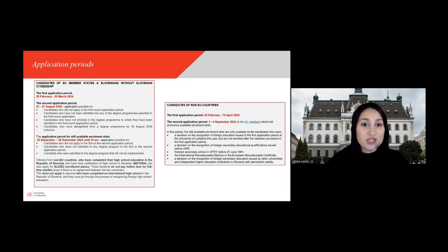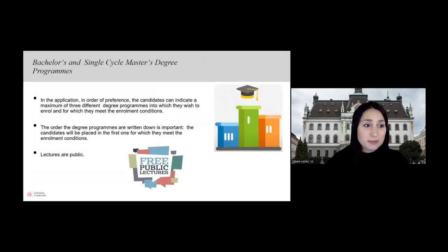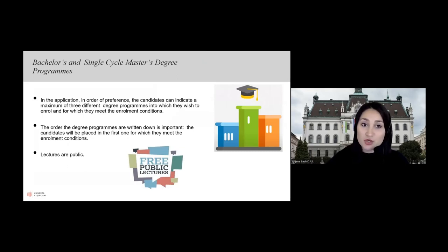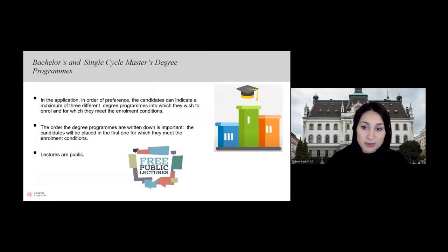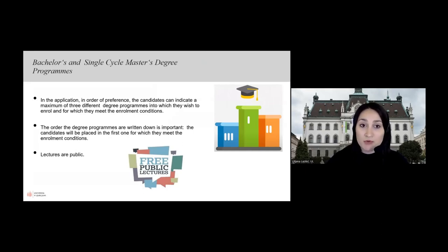In the first application period you may indicate a maximum of three bachelor or single-cycle master degree programs in order of preference. The order in which degree programs are indicated is very important, because in the selection process you will be admitted to the first degree program for which you met all the requirements and achieved the minimum number of points in the case of limited enrollment.